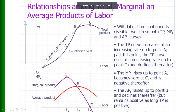With labor time continuously divisible, we can smooth the total product, marginal product of labor, and average product of labor curves. The total product curve increases at an increasing rate up to point A. Past this point, the total product curve increases at a decreasing rate up to point C, and declines thereafter — that is, after point C the total product curve declines.